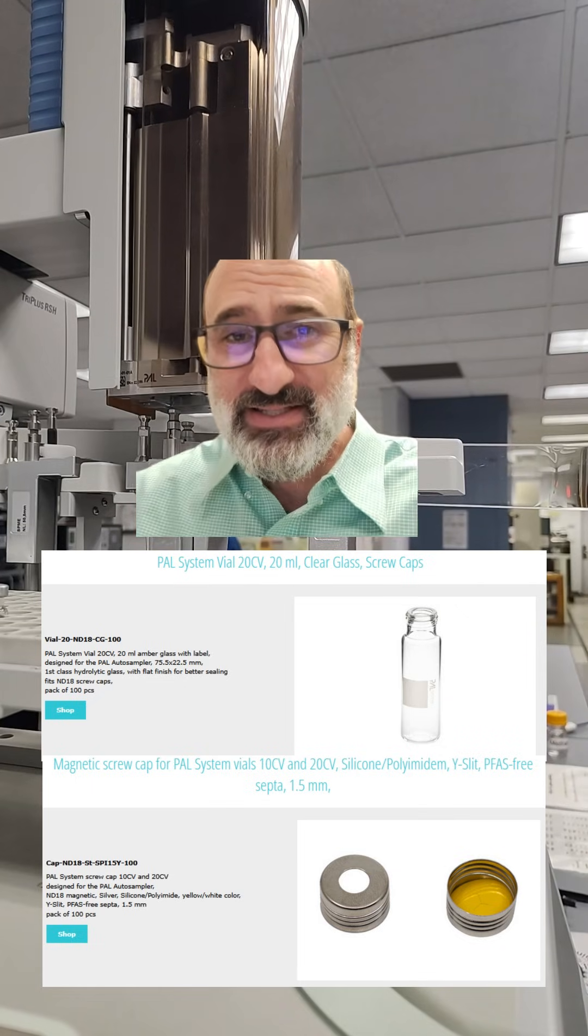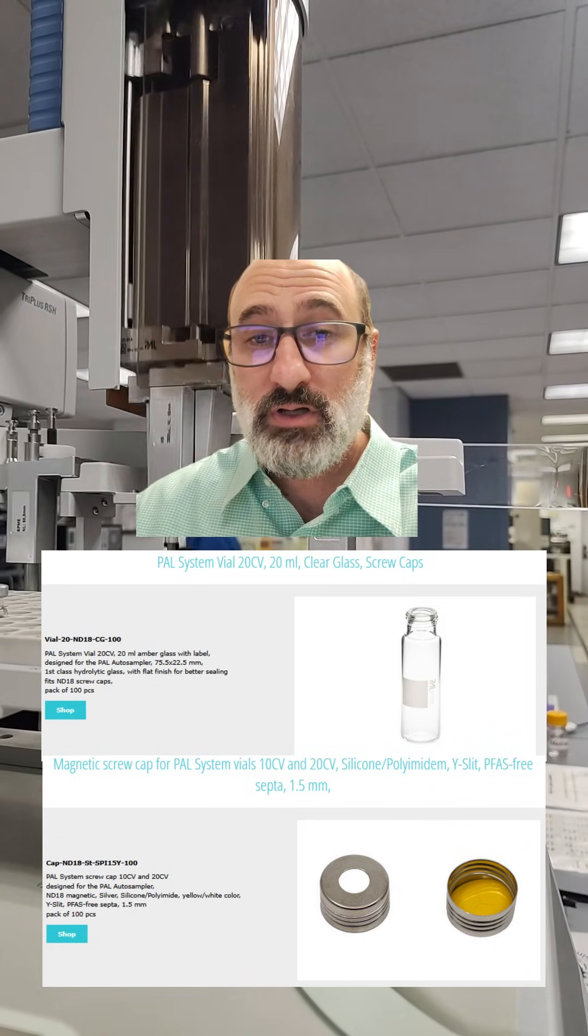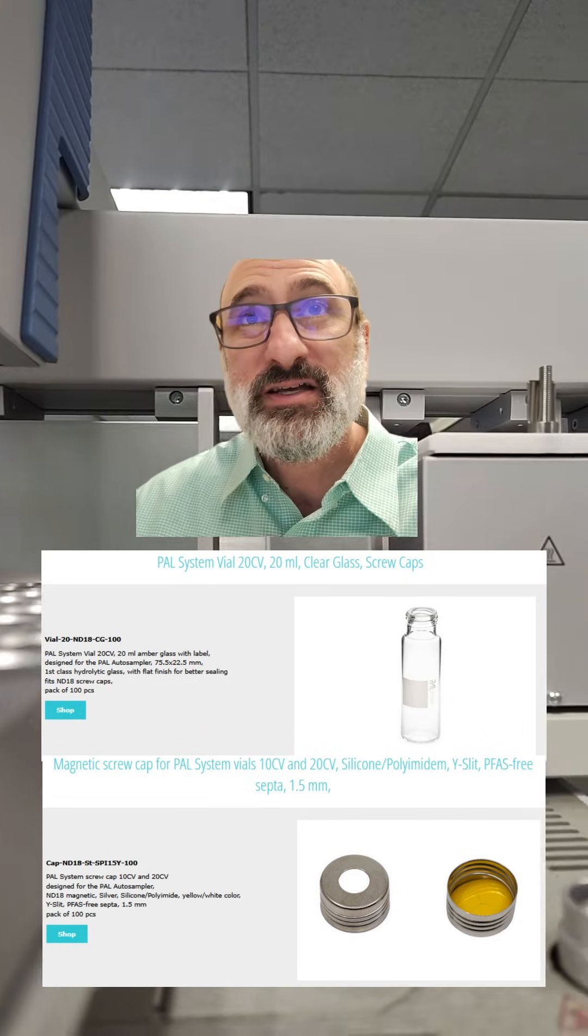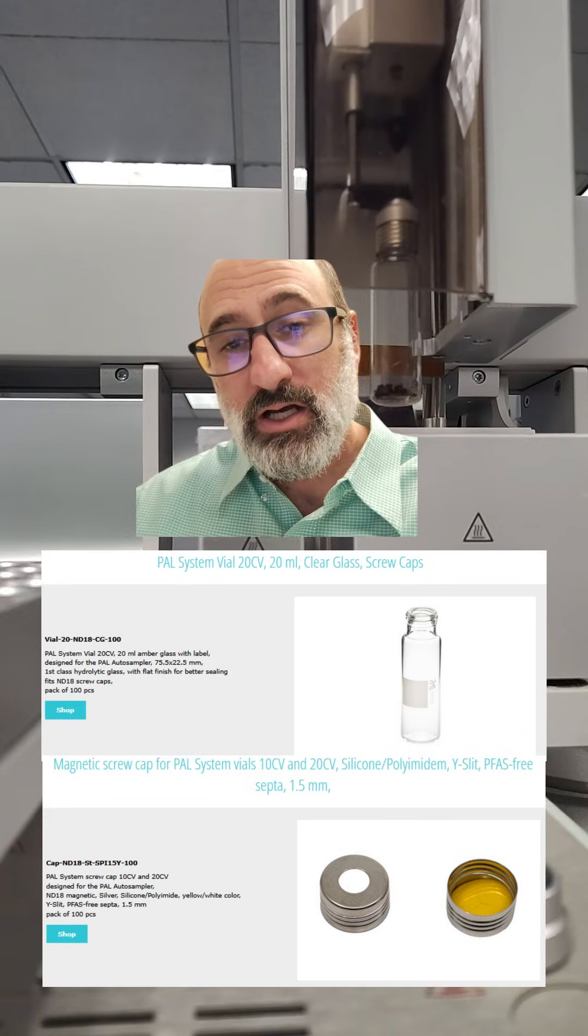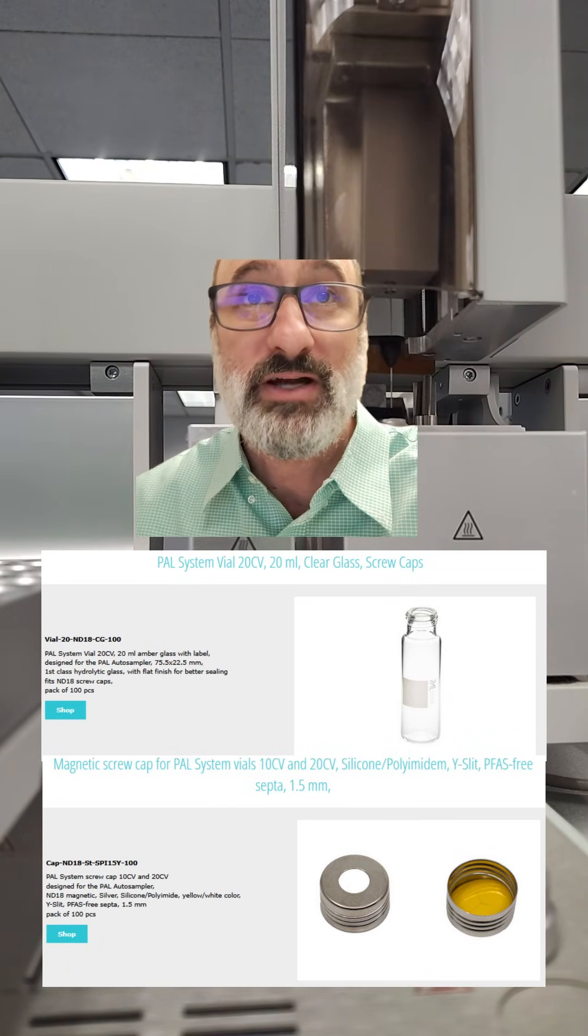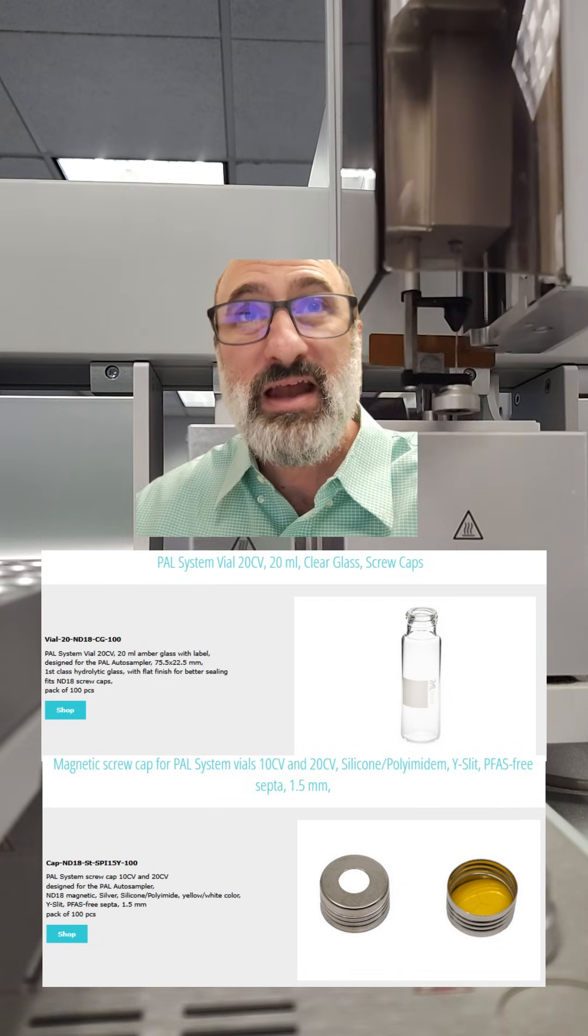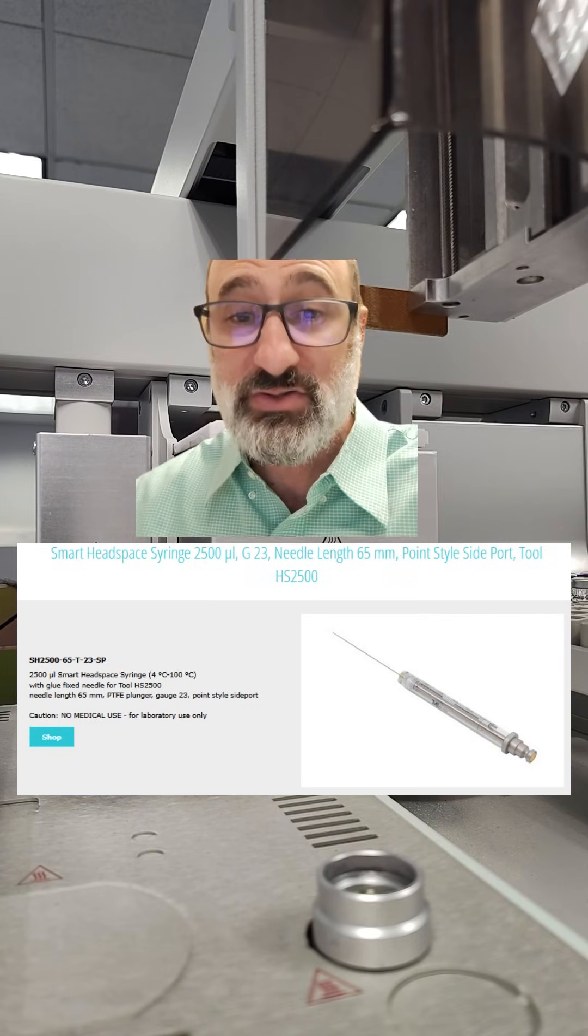For this, since we're doing headspace, we're using these 20 mL glass vials and we're using these PFAS-free septa. That's important these days. They got to be the magnetic septa, 18 millimeter. Important to be the right size, of course.